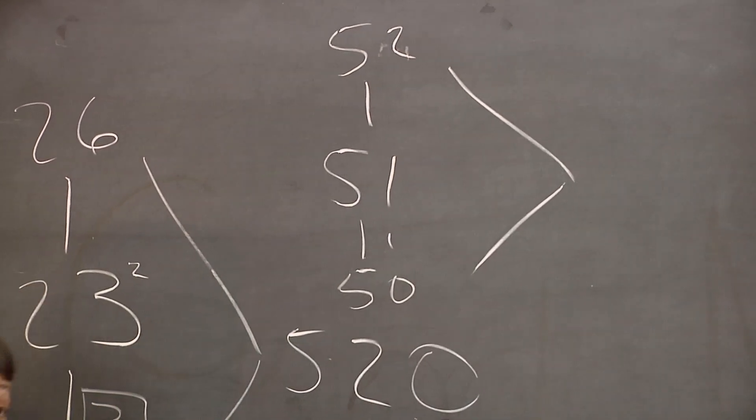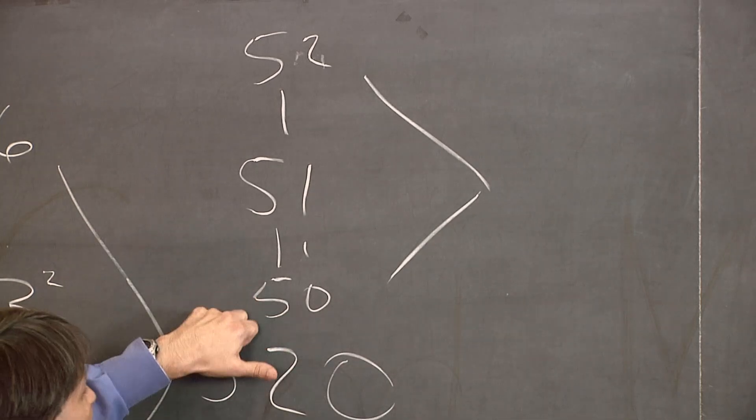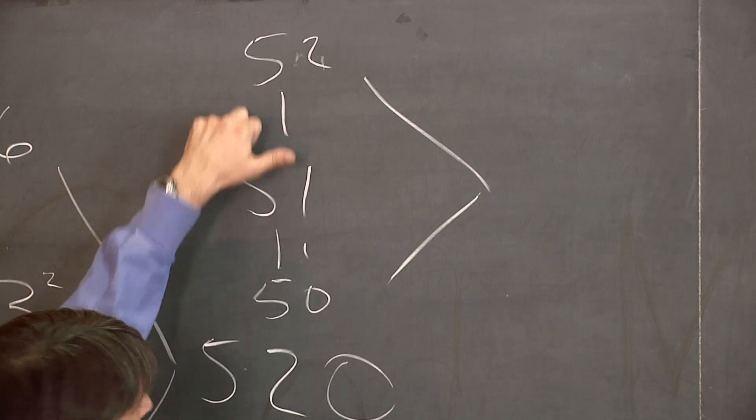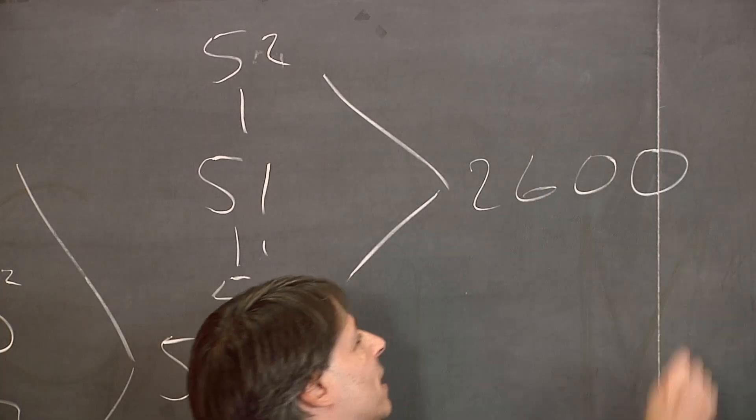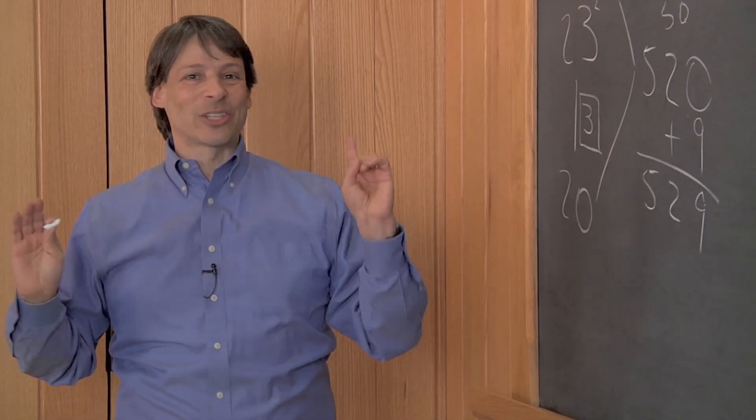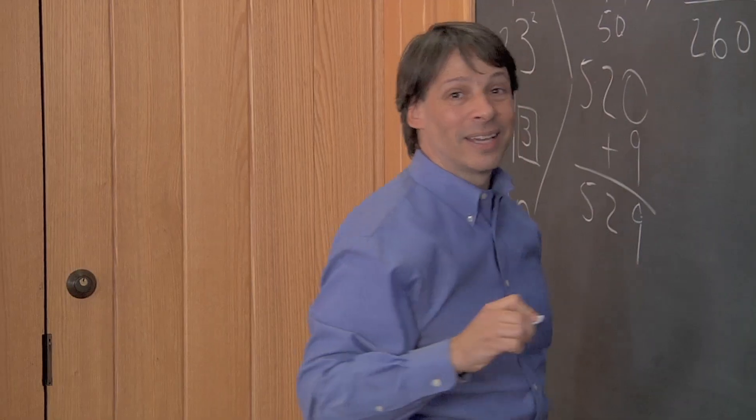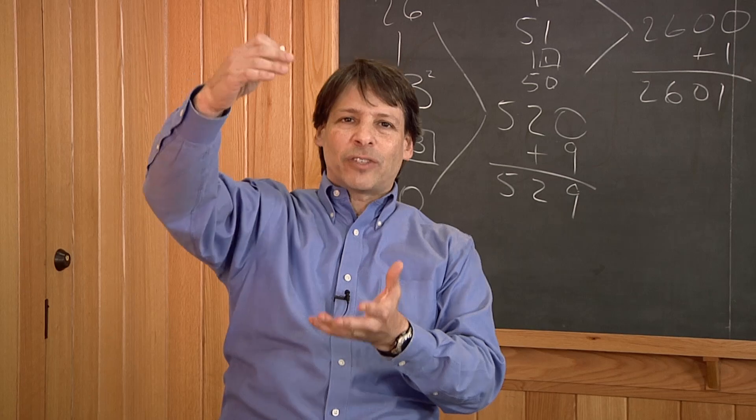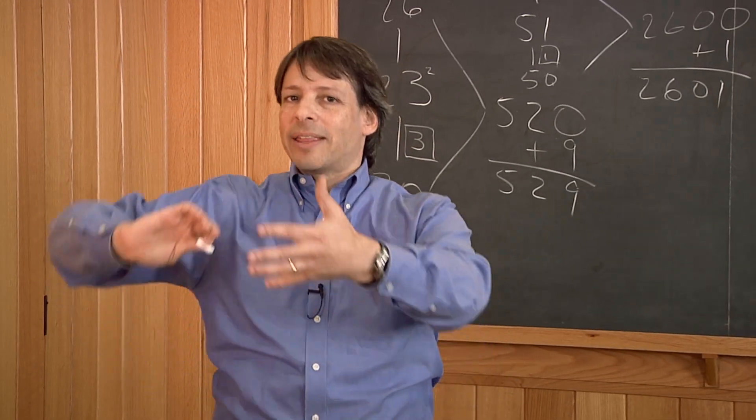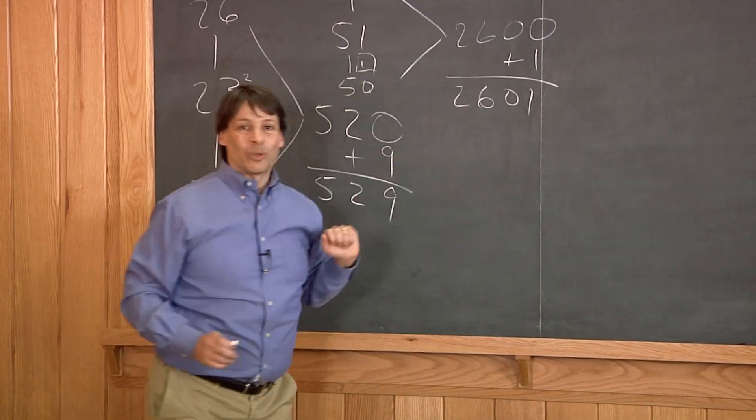Let's do 52 times 50. There are two ways we can do this problem. One is we do 5 times 52 and attach a 0. So 5 times 50 is 250. 5 times 2 is 10. 250 plus 10 is 260. Attach the friendly 0 to get 2,600. Almost done. All we have to add to that is the square of 1 which is 1 giving us 2,601. By the way, there was another way we could have done the 50 times 52 problem. We could take advantage of the fact that 50 is half of 100. So if I do 50 times 52 I can take half of 52 which is 26 then multiply that by 100 to get 2,600. Either way we get 2,600 plus 1 which is 2,601.